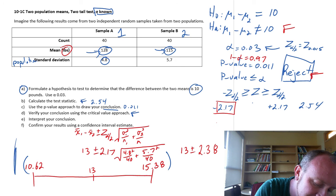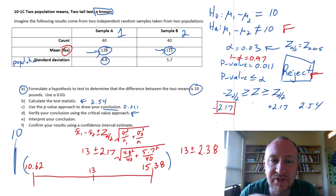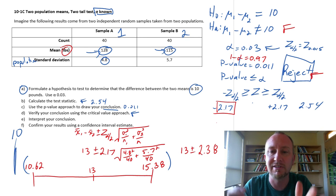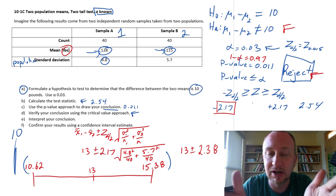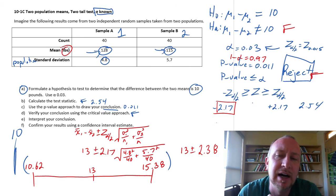And here, in our interval estimate, I've said it's between 10.62 and 15.38. 10 is down here somewhere. 10 is not included in that interval. So at that level of significance, 10 is not within that interval. I'm 97% confident that it's between 10.6 and 15.38. 10 is not among those. So that is consistent with our rejection of that null hypothesis. I hope that all helps. I hope that makes sense. Thank you again for watching. Take care.